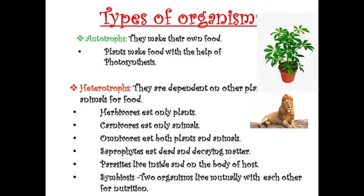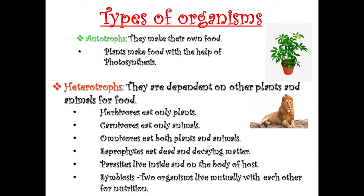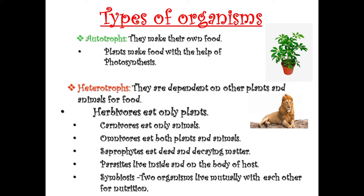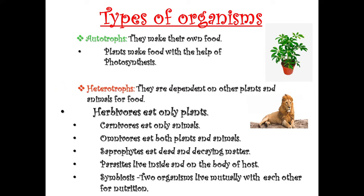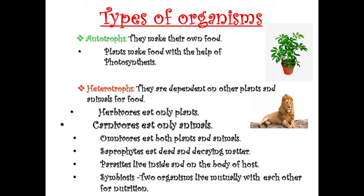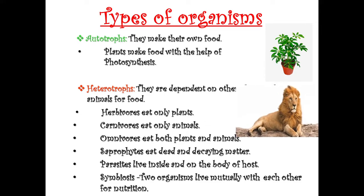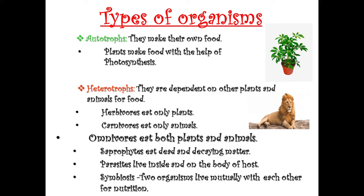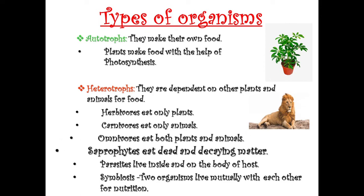Heterotrophs are dependent on other plants and animals for nutrition. Examples include herbivores like deer, cow, and buffalo that eat only plants; carnivores like lions that eat only animals; and omnivores like humans that eat both plants and animals. New in this chapter are saprophytes, parasites, and symbiosis.